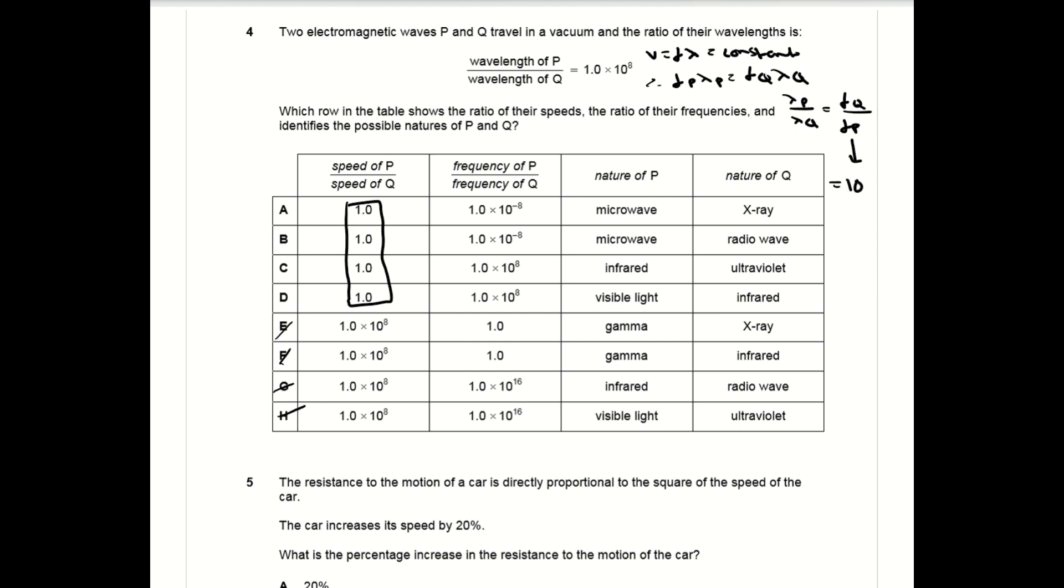At this point you can see that the wavelength of P is greater than the wavelength of Q, and this could only be possible if P is a microwave and Q is an x-ray, so the answer is A.